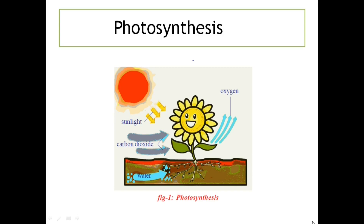Now coming to the next part of the lesson — photosynthesis — which consists of two words: photo means light and synthesis means to prepare. All plants prepare complex organic substances from simple inorganic substances like water, carbon dioxide, light energy and chlorophyll. The plants acquire water from soil through roots, take carbon dioxide from atmospheric air, light energy from the sun, and chlorophyll is present in their leaves. The process of photosynthesis is very complex.